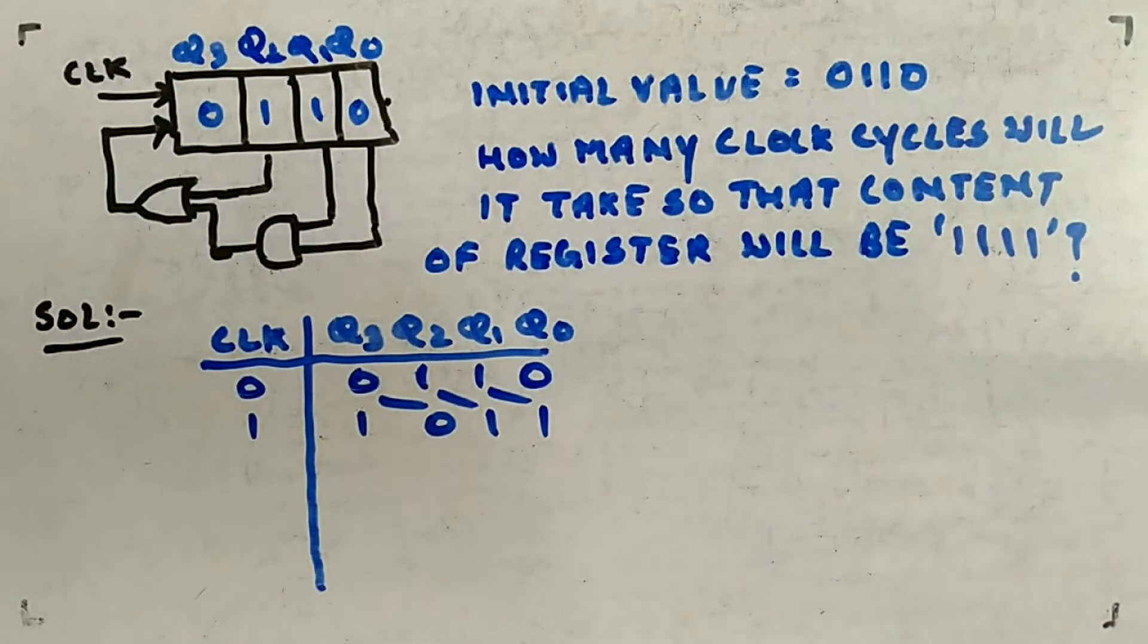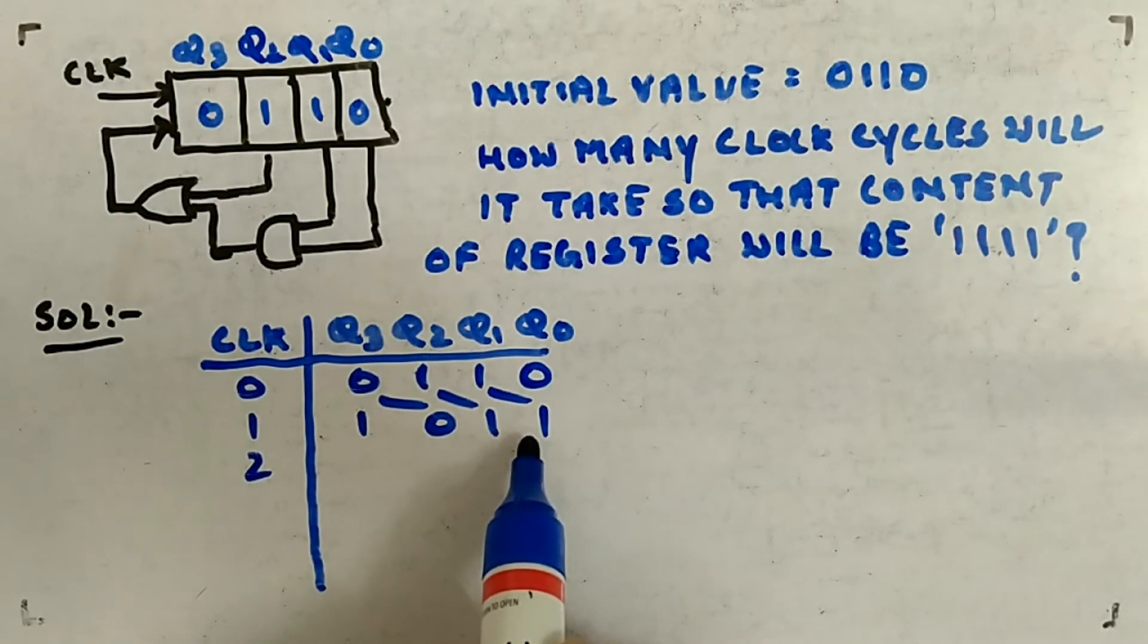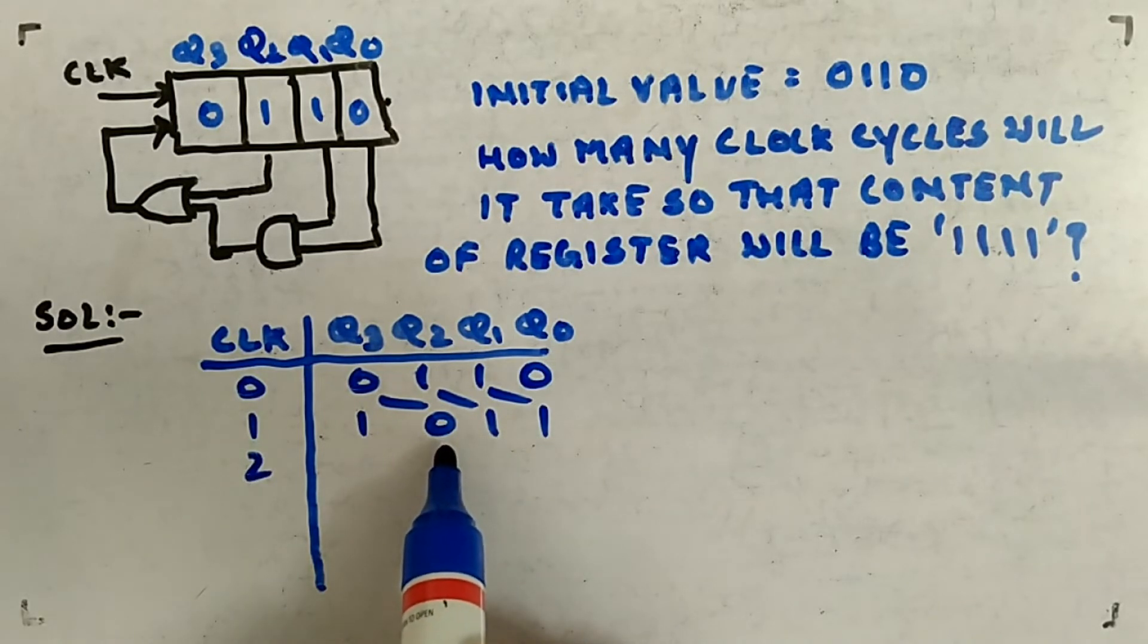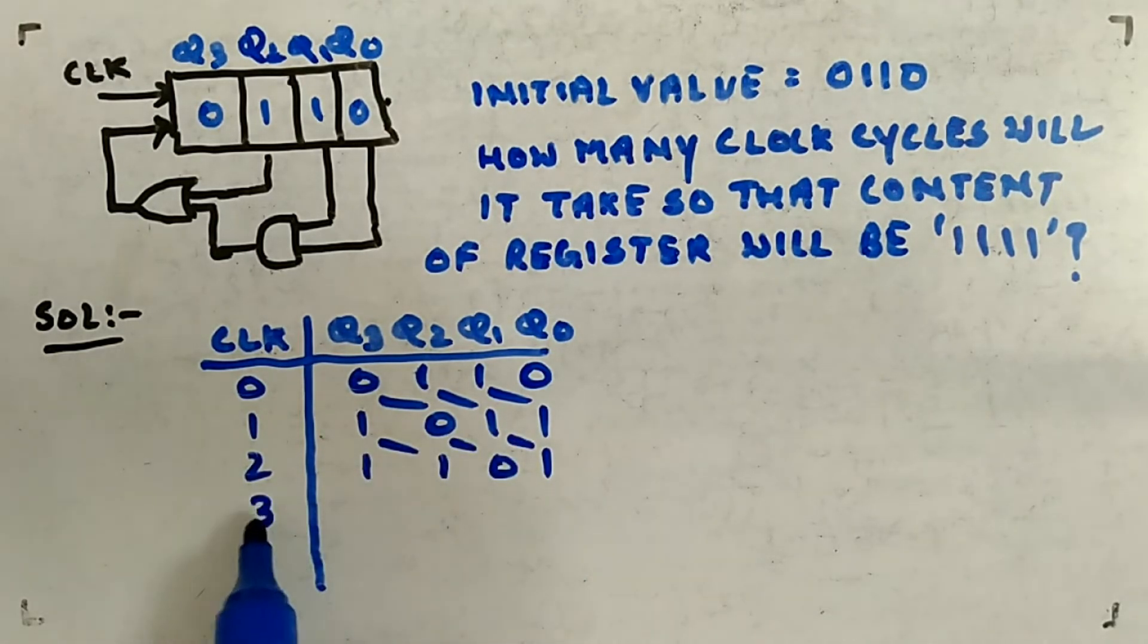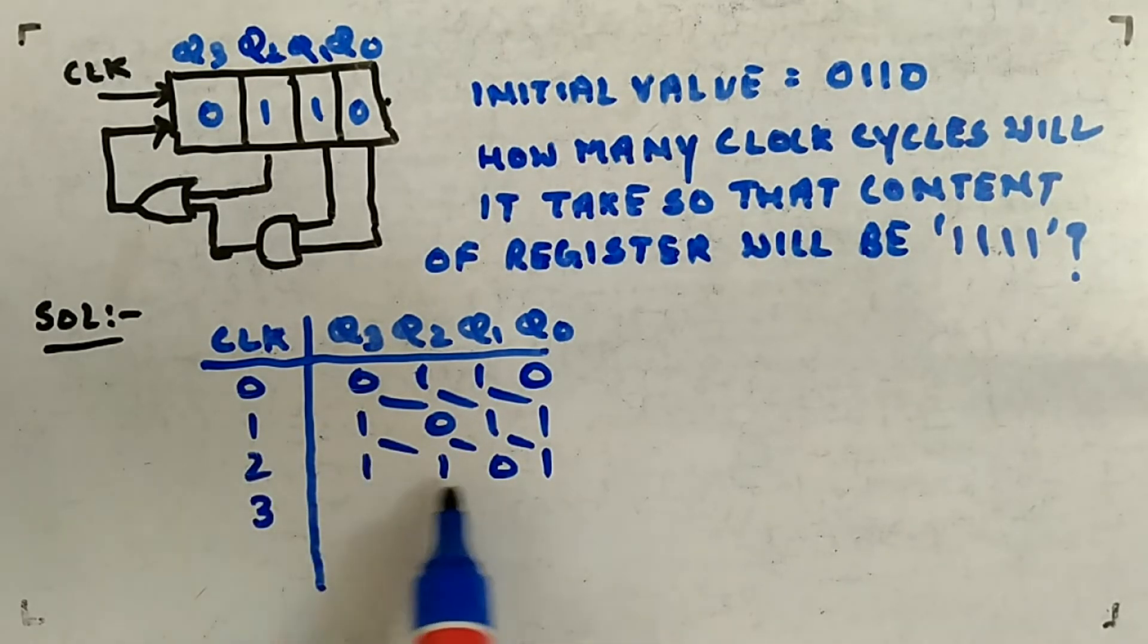Second clock pulse: OR these two guys, 1 dot 1 is 1, plus 0 is 1. 1 will come here - 101, these guys will be shifted right. Then third clock pulse: AND these two guys, OR with 1, so it will come 1110. So it will take...